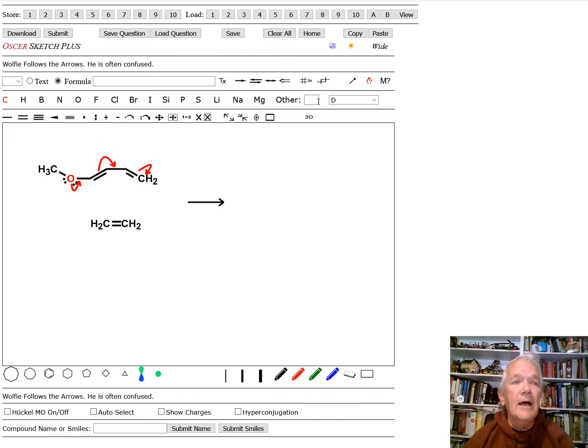So you would do this by drawing an arrow from the oxygen to this position. This double bond then would move over there. This double bond would move over there. And if we ask Oscar to calculate what happens, Oscar says, well, it turned it around. Oscar always draws the molecules the way Oscar likes them, whether you like it or not.